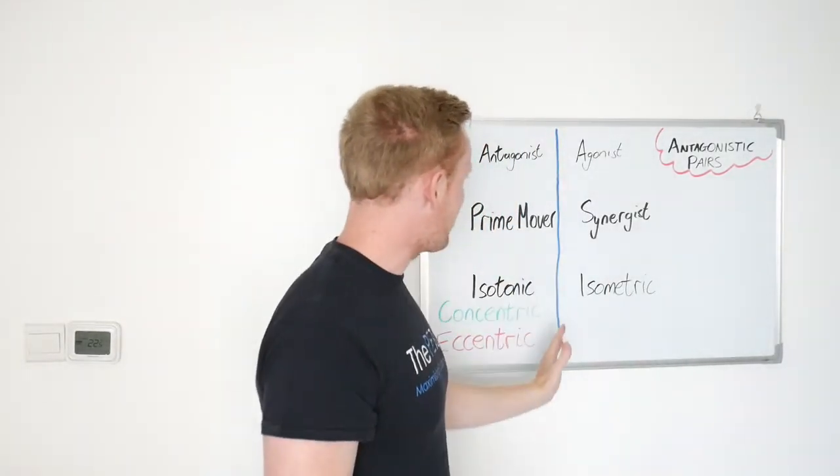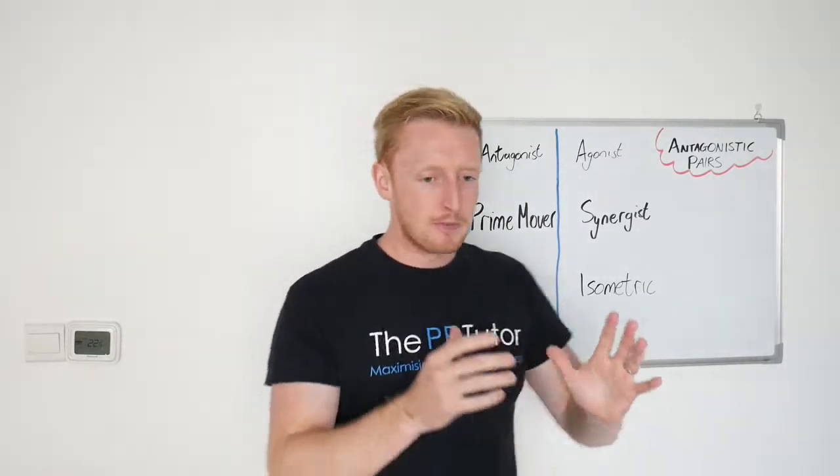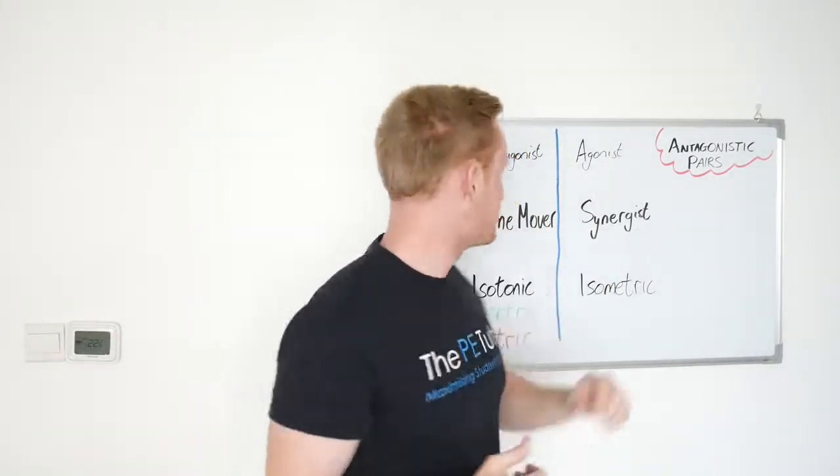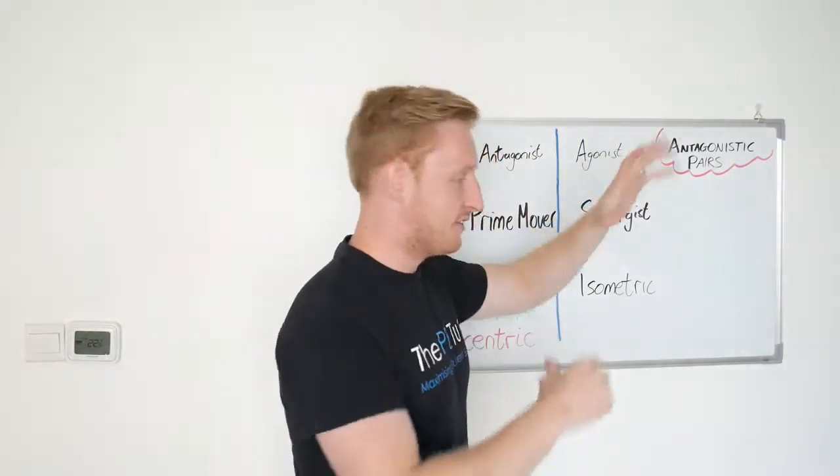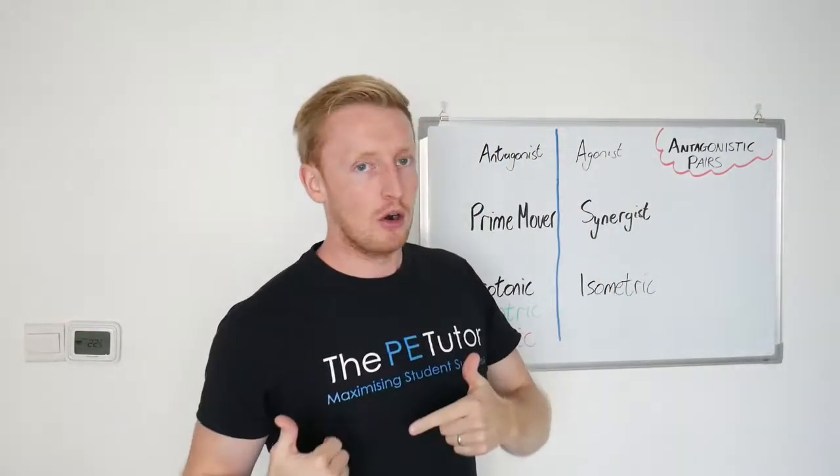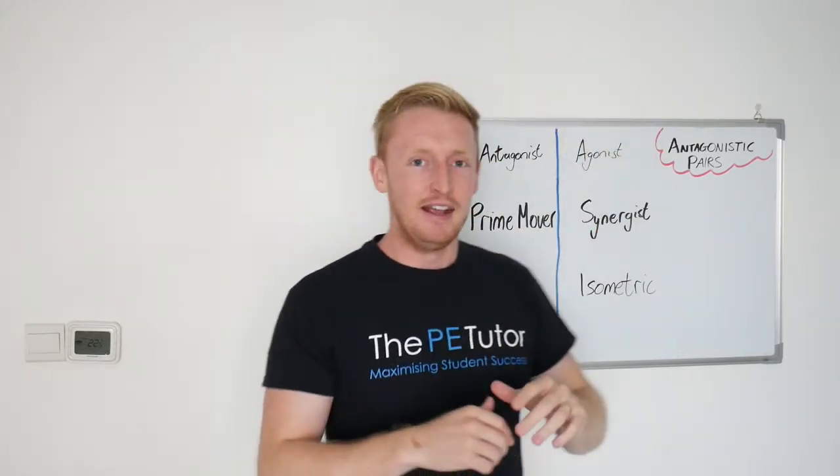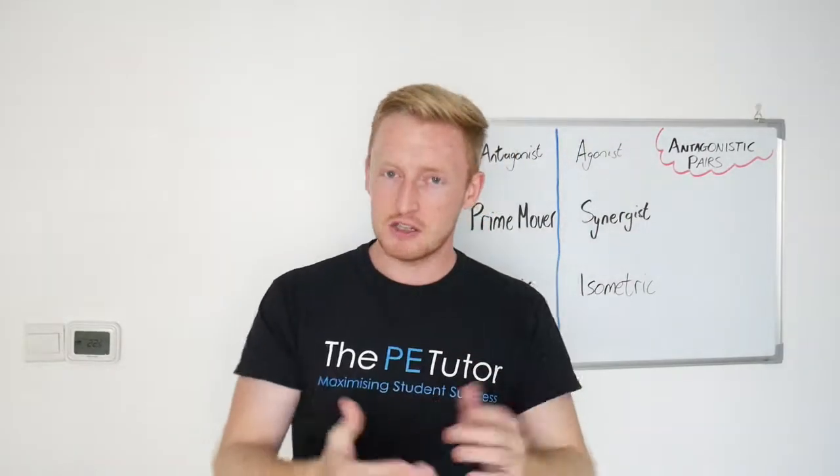I've put this line down the middle of the board here because when it comes to remembering these definitions, try to remember them in pairs because quite often one is the definition of the opposite of the other. So we're going to start off with antagonist and agonist.